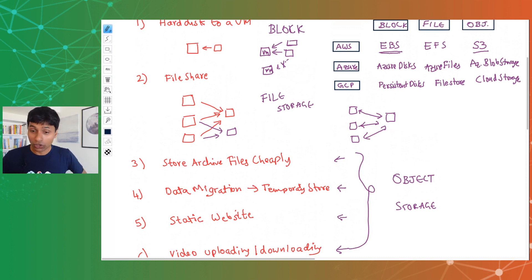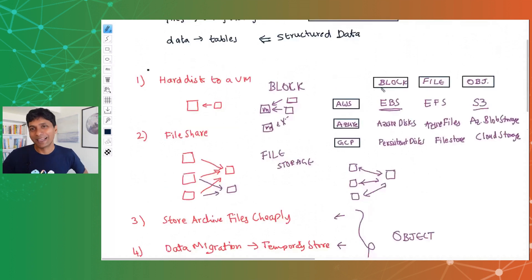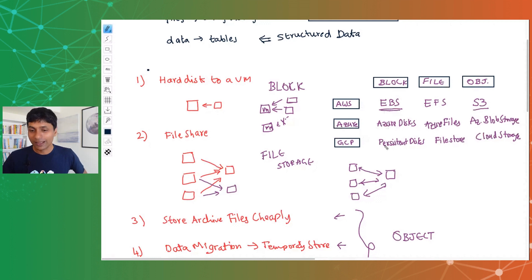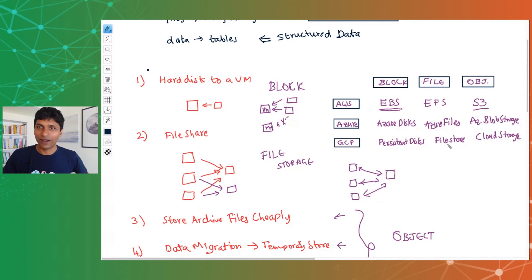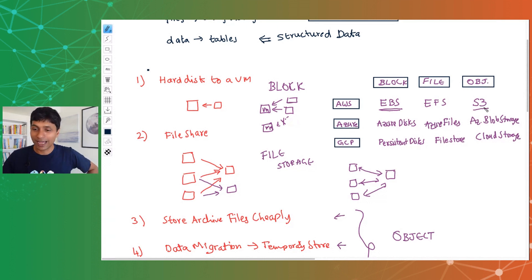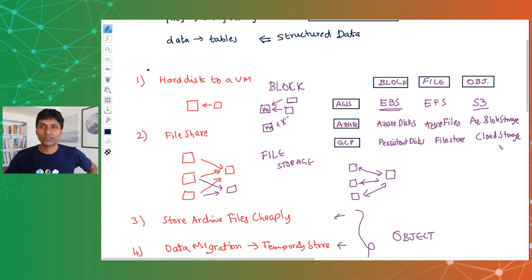To recap: Elastic Block Store is the block storage service in AWS, Azure Disks is the one in Azure, and Persistent Disk is the block storage service in GCP. For file storage, EFS is the service in AWS, Azure Files is the service in Azure, and Filestore is the service in GCP. For object storage, S3 is the service in AWS, Azure Blob Storage is the service in Azure, and Cloud Storage is the service in Google Cloud.